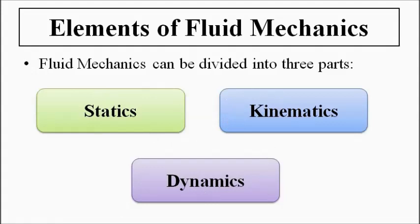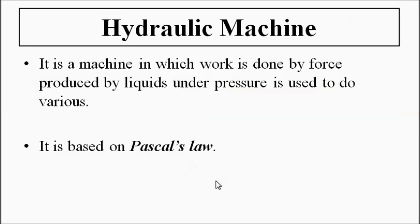So fluid mechanics is subdivided into three parts: statics, kinematics, and dynamics. The second part of the subject is hydraulic machines. A hydraulic machine is a device in which work or displacement is done by the force produced by liquids under pressure. The pressure is variable depending on how much work is to be done. Mainly, water is used.